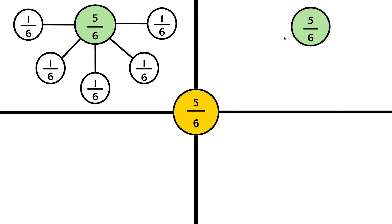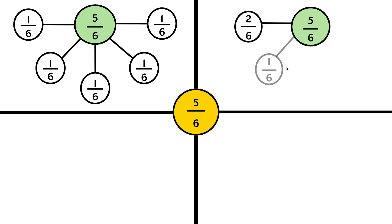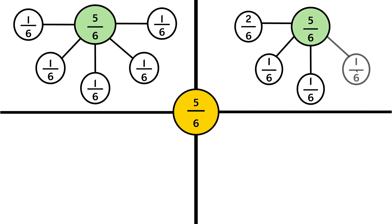Let's decompose this fraction using a different number bond. Let's try 2/6 plus 1/6, that would be 3/6. Let's keep going until we get to 5/6. Adding another 6th would be 4/6, and adding another 6th would give us 5/6.